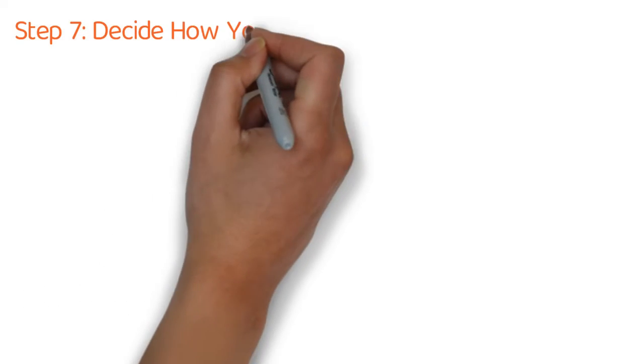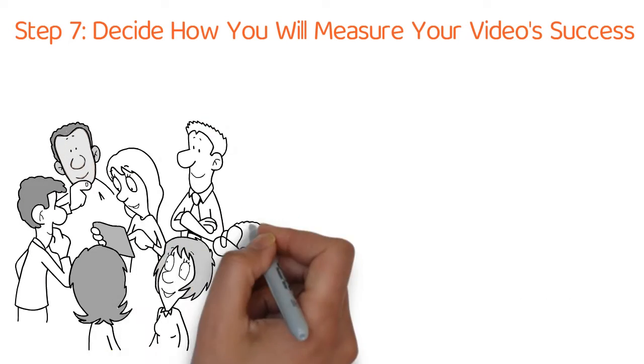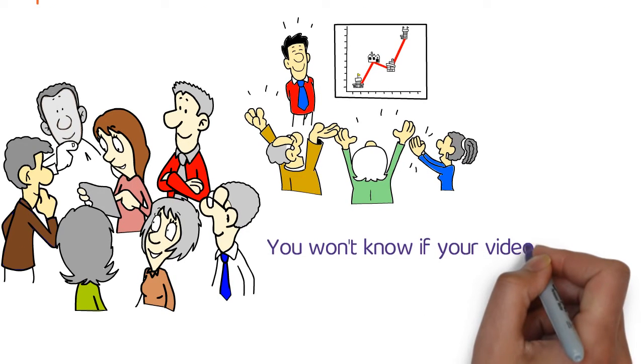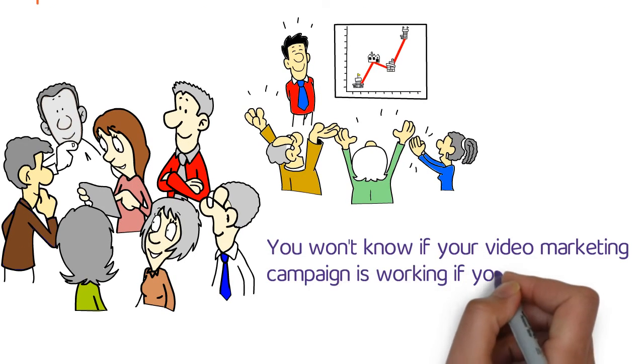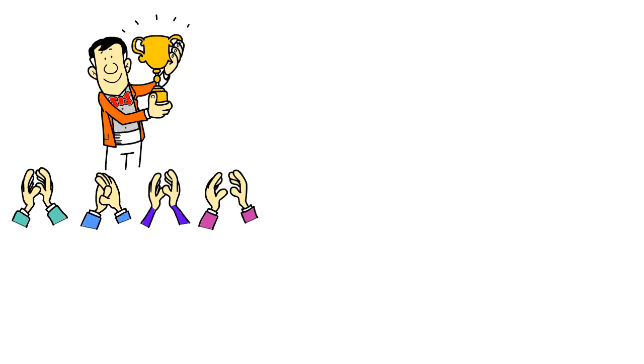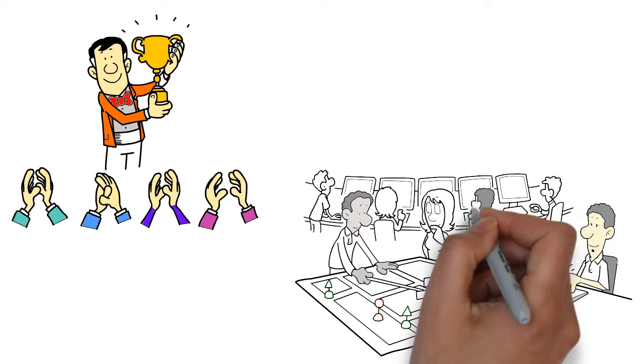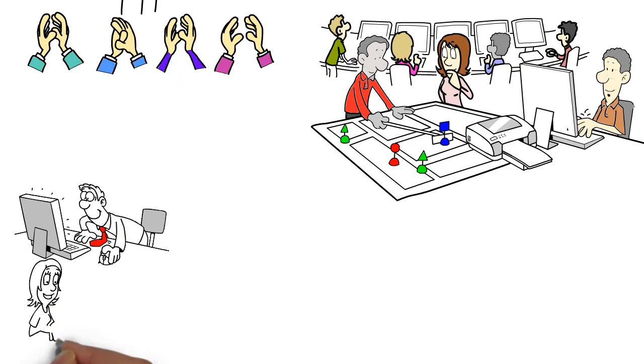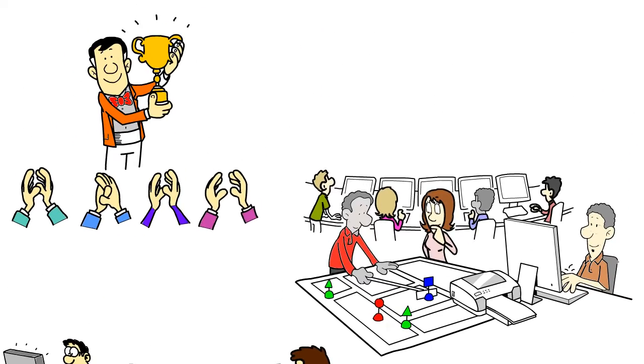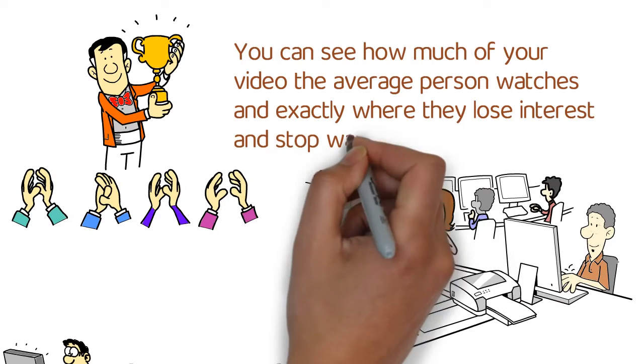Step 7. Decide how you will measure your video's success. There's no way you can objectively measure the effectiveness of your video without first determining an effective method for tracking its success. You won't know if your video marketing campaign is working if you have no way of measuring it. Refer back to your goals. If your goal is to increase brand awareness, then focusing on views, likes, and shares are a great way to get an accurate measurement of how well your video is performing. However, keep in mind there are a ton of different metrics you can use to determine your video's success. You can see how much of your video the average person watches and exactly where they lose interest and stop watching.